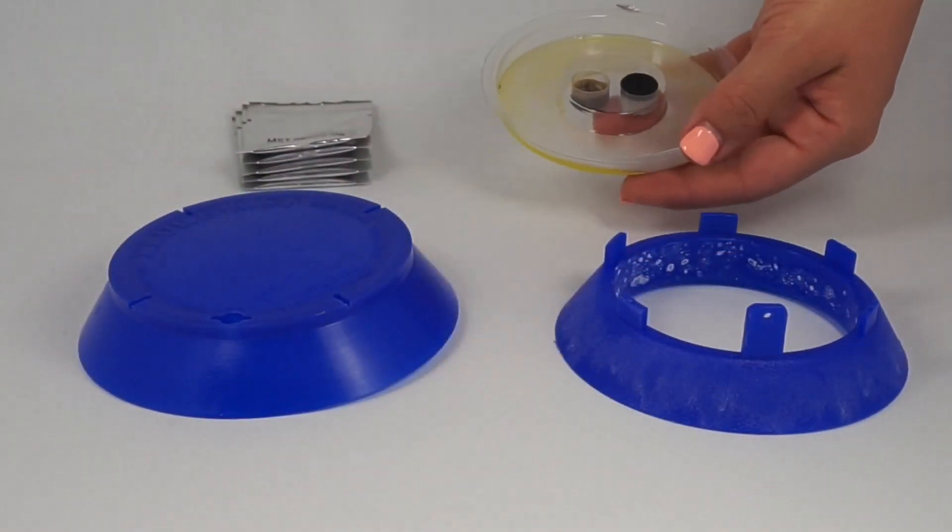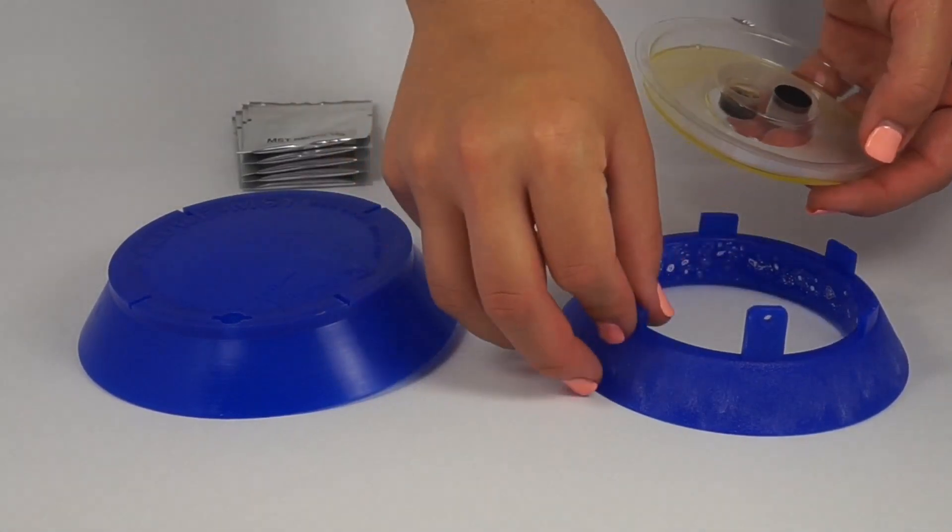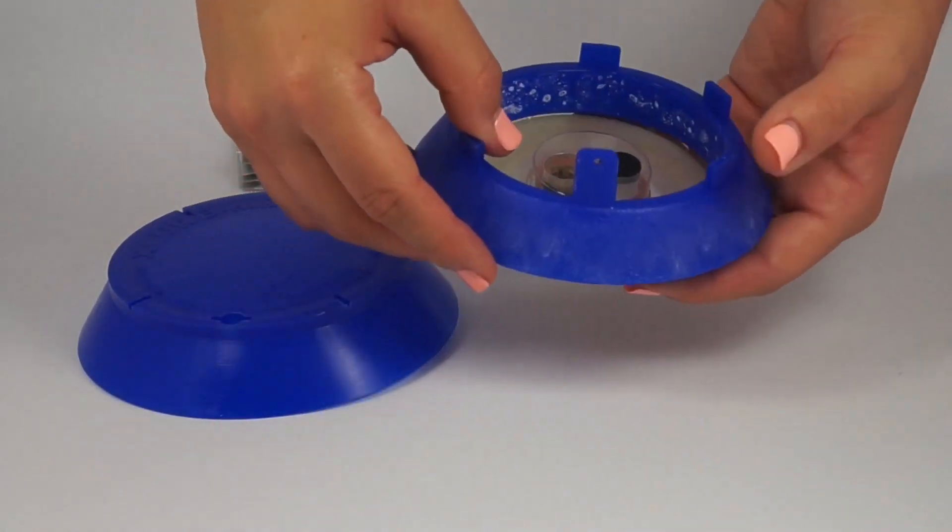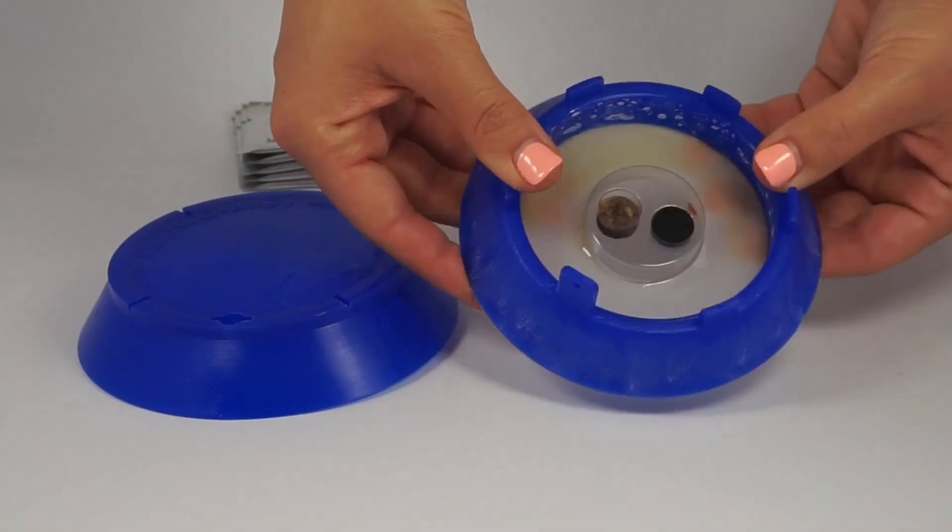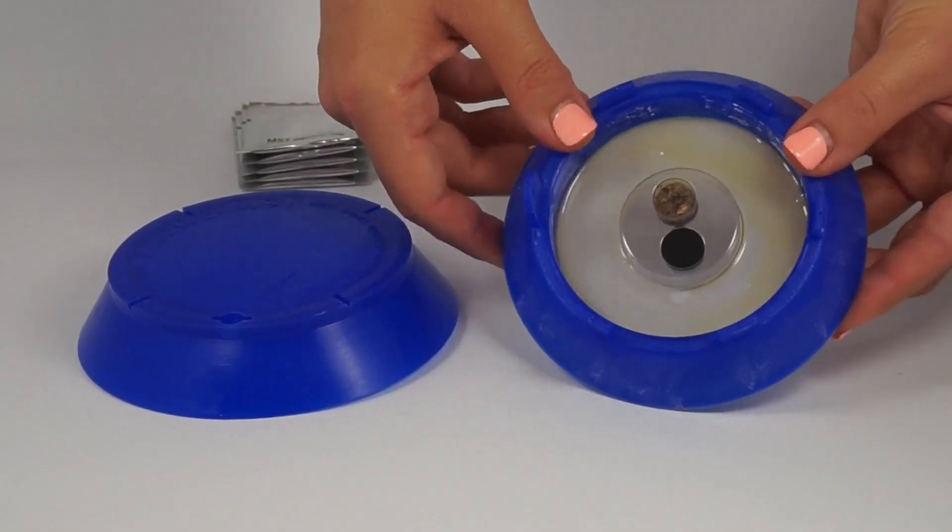Second, you take the oil cartridge and click it into the underneath of the base of the trap. As you can see, the cartridge attaches very easily to the base.